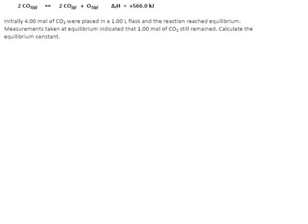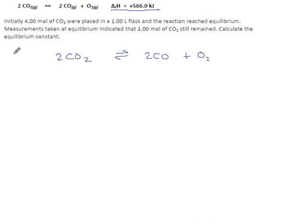We've got another equilibrium situation here, and from the information they're giving, I have a feeling we're going to need an ICE table. They say that carbon dioxide can break down into carbon monoxide and molecular oxygen, and that reaction has a delta H of plus 566, from which I take that it is endothermic. So we can say heat goes on the left — heat is a reactant, it's one of the things you have to put in to make this reaction go.